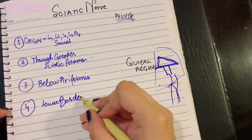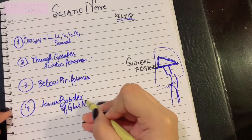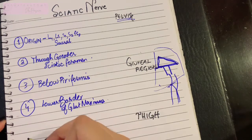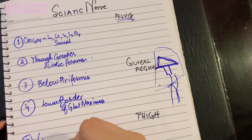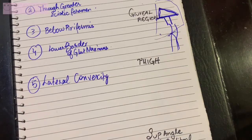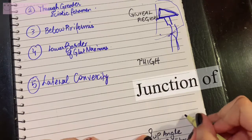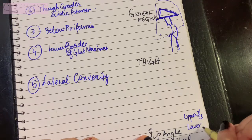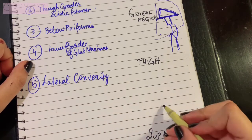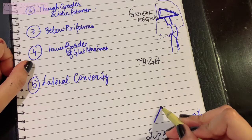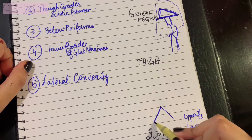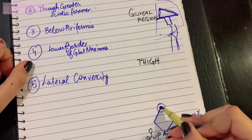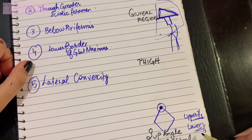Once the sciatic nerve has entered the thigh, point number five is that it runs with a lateral convexity. When it approaches the upper two-thirds and the lower one-third of your back of the thigh, there lies your popliteal fossa superior angle. The popliteal fossa is a triangular depression behind your knee joint. The superior angle of the popliteal fossa lies right at the junction of upper two-thirds and lower one-third of your thigh.